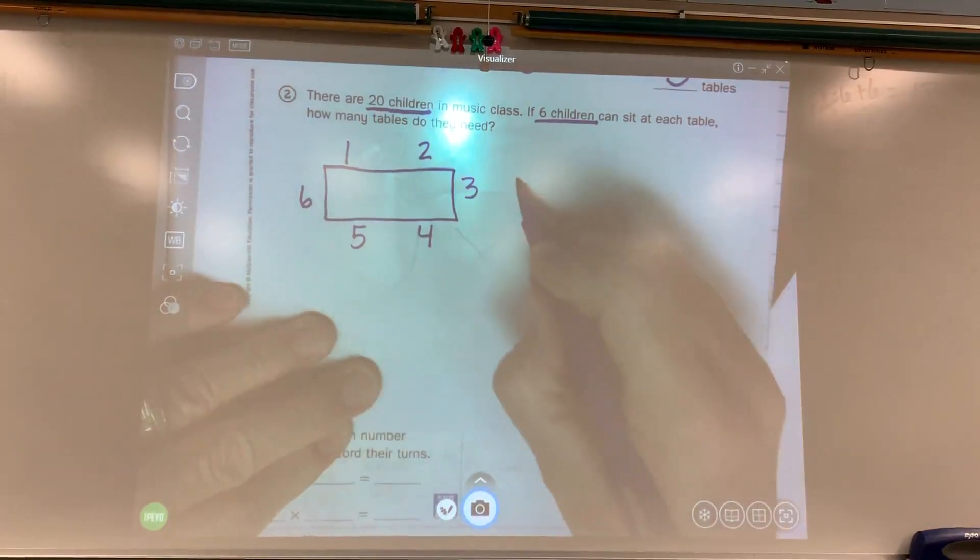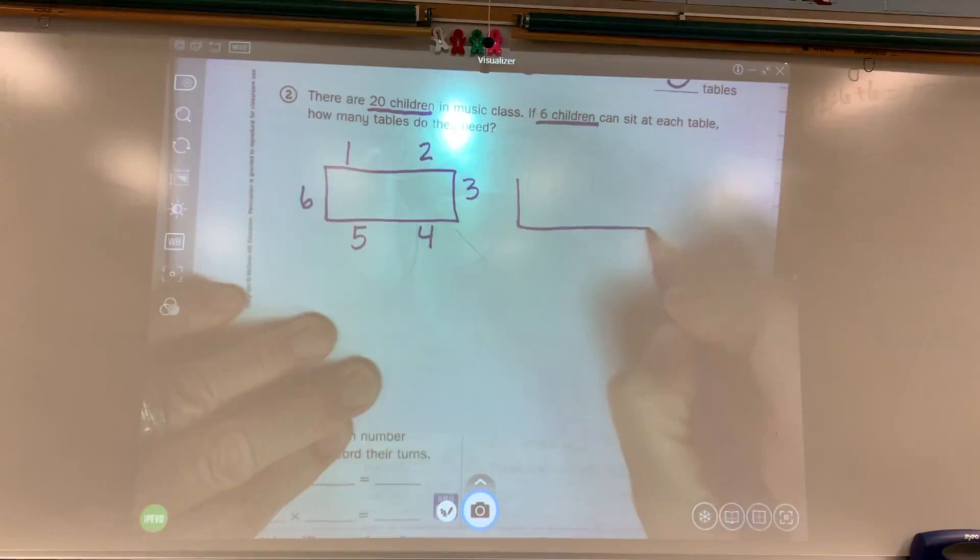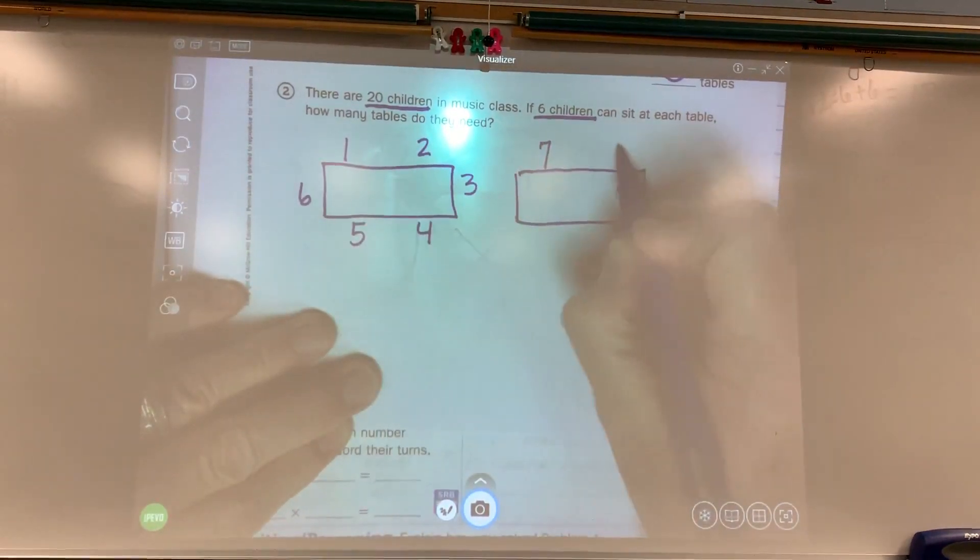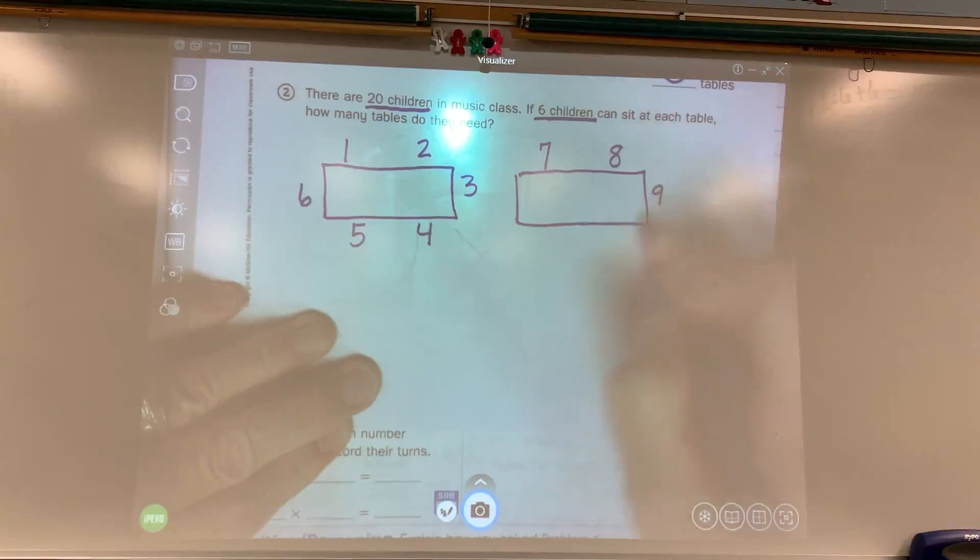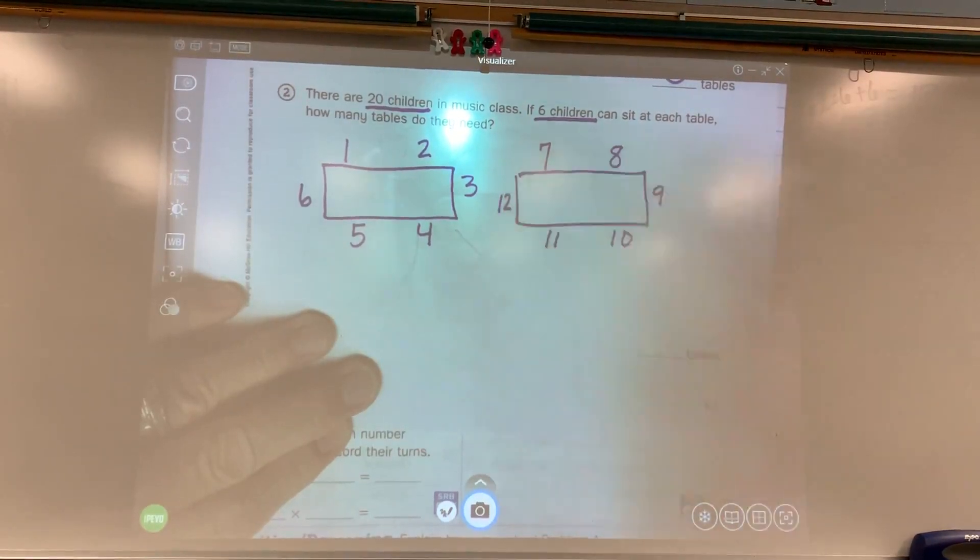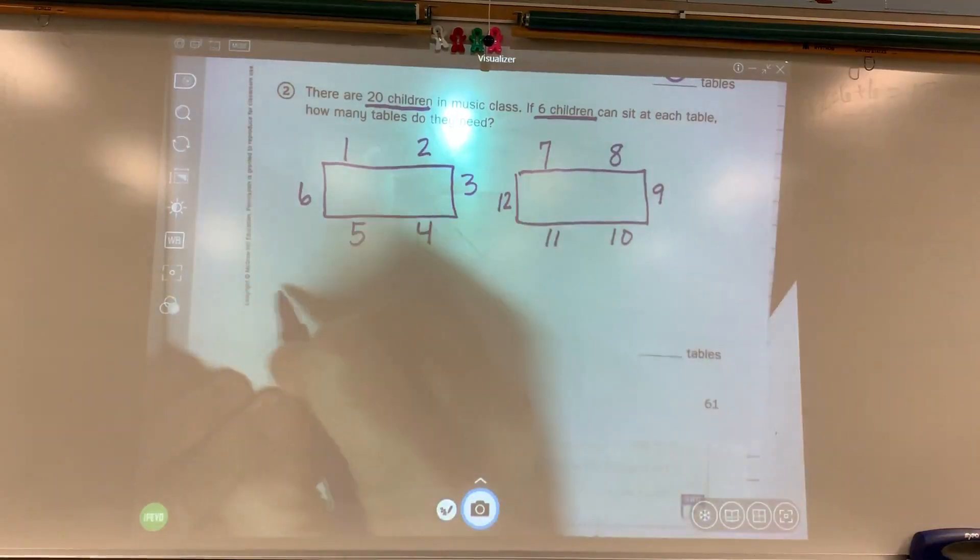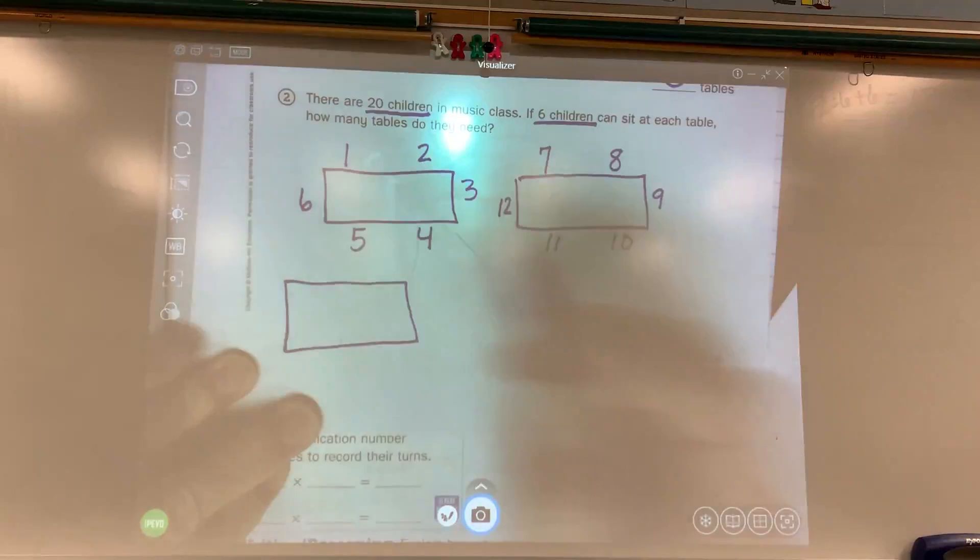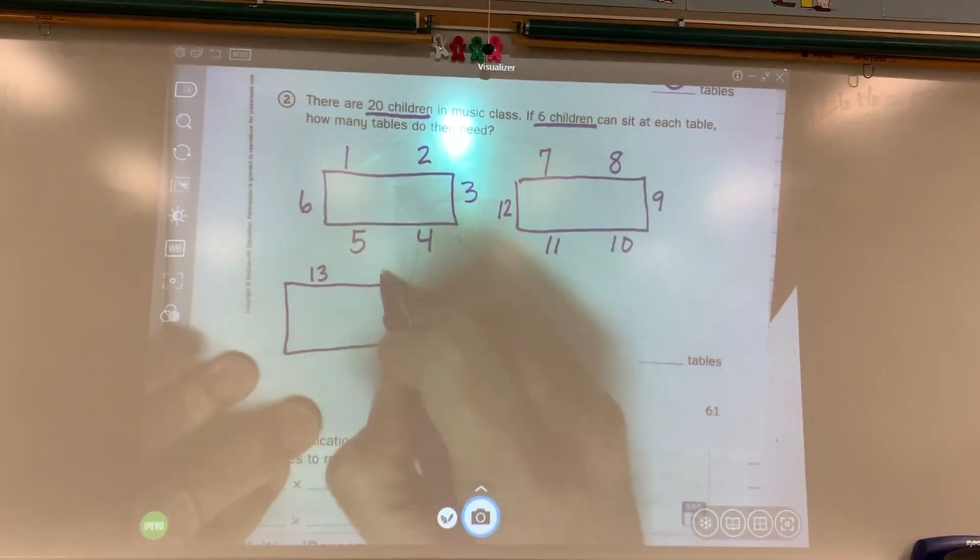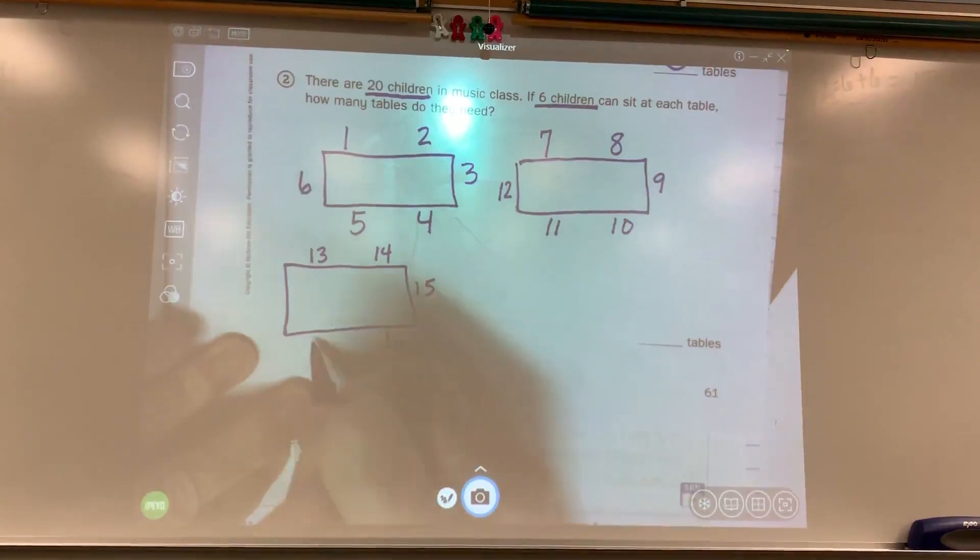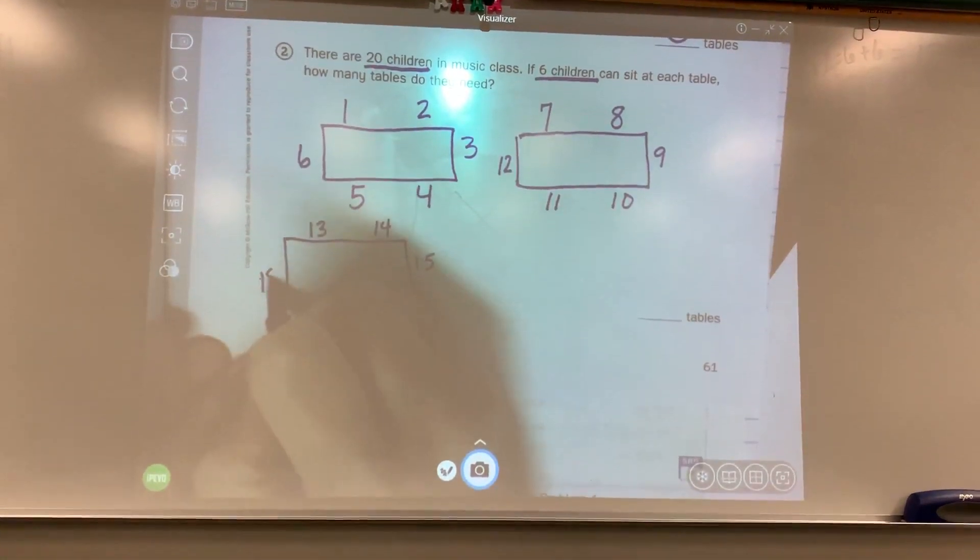I need another table because I'm going to 20. Seven, eight, nine, 10, 11, 12. All right. I need another one. 13, 14, 15, 16, 17, 18.